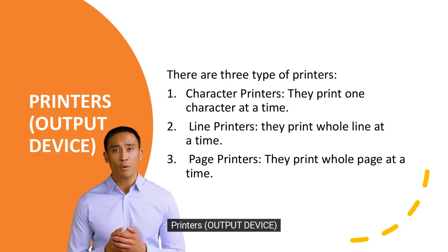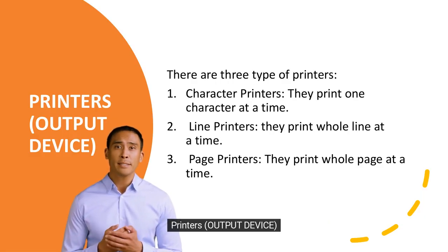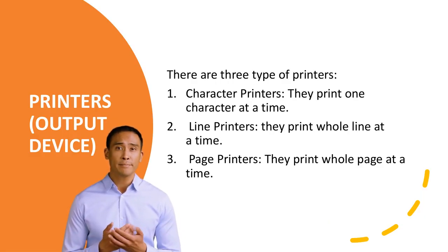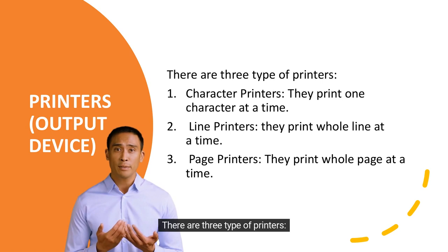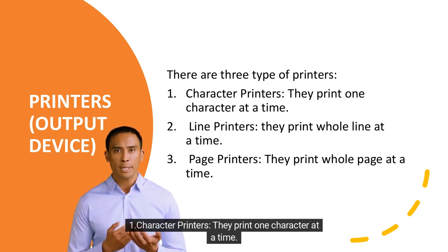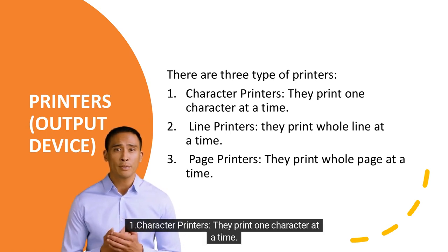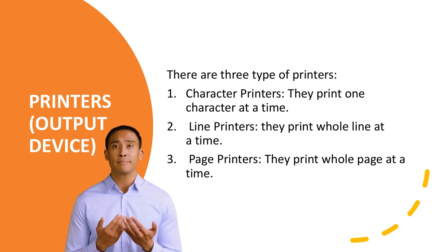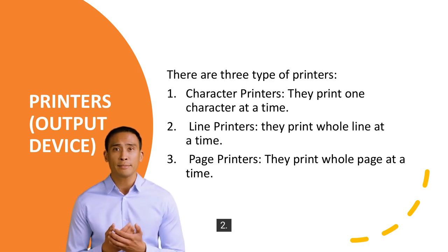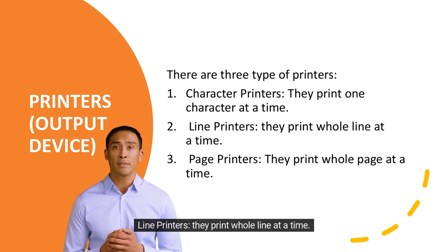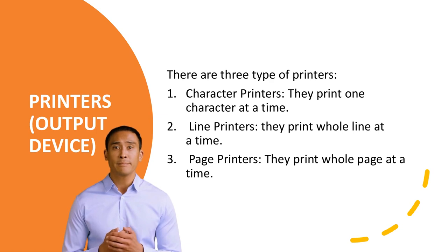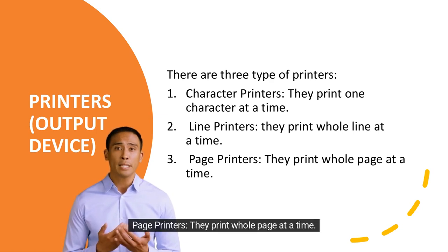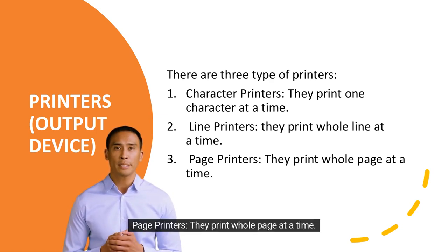Printers — output device. There are three types of printers: 1. Character printers — they print one character at a time. 2. Line printers — they print a whole line at a time. 3. Page printers — they print a whole page at a time.